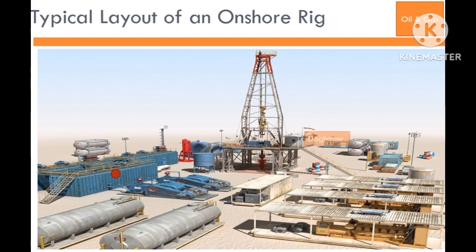The doghouse. In the context of a drilling rig, a doghouse refers to a small structure or building located near the rig floor. It serves as a workspace and storage area for various drilling tools, equipment, and supplies. The term doghouse is often used in the oil and gas industry to describe this functional space where drilling crew members can access and store tools, maintain equipment, and perform administrative tasks related to the drilling operation.